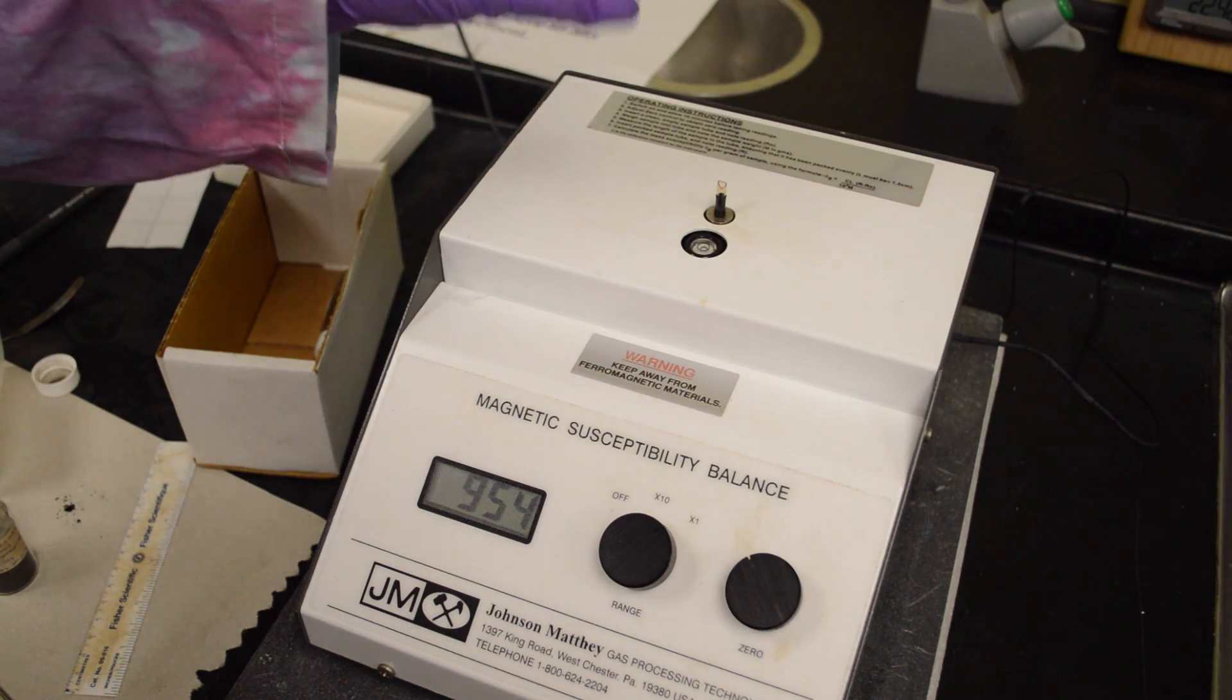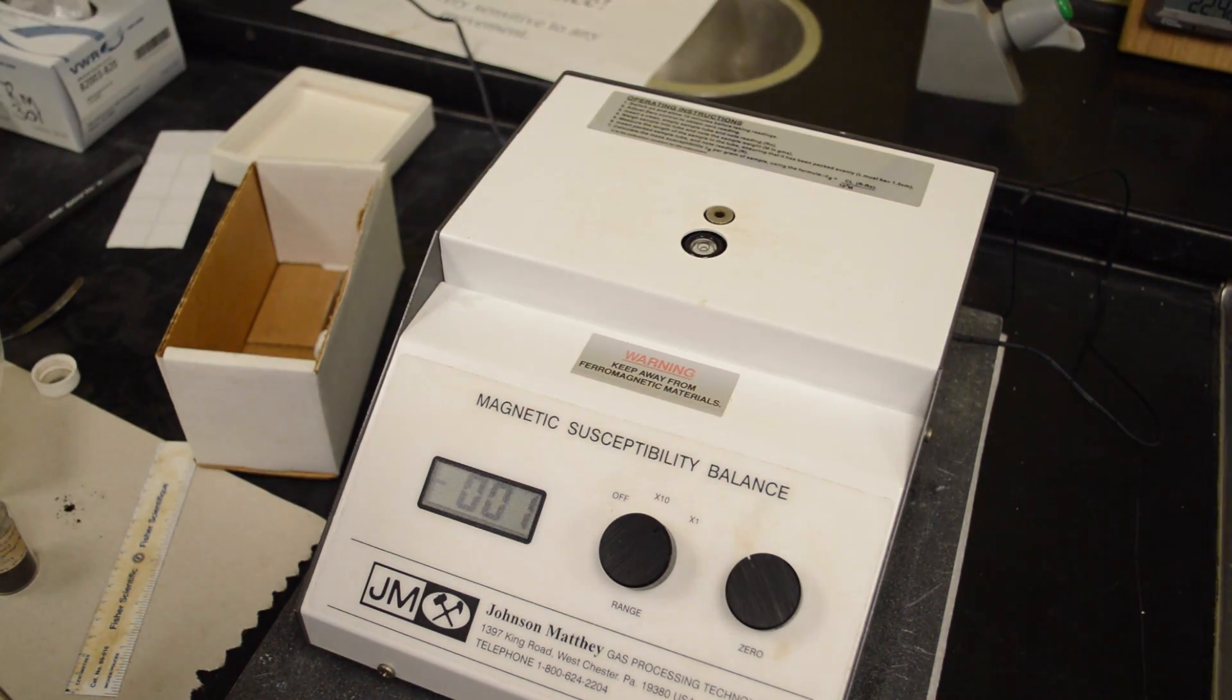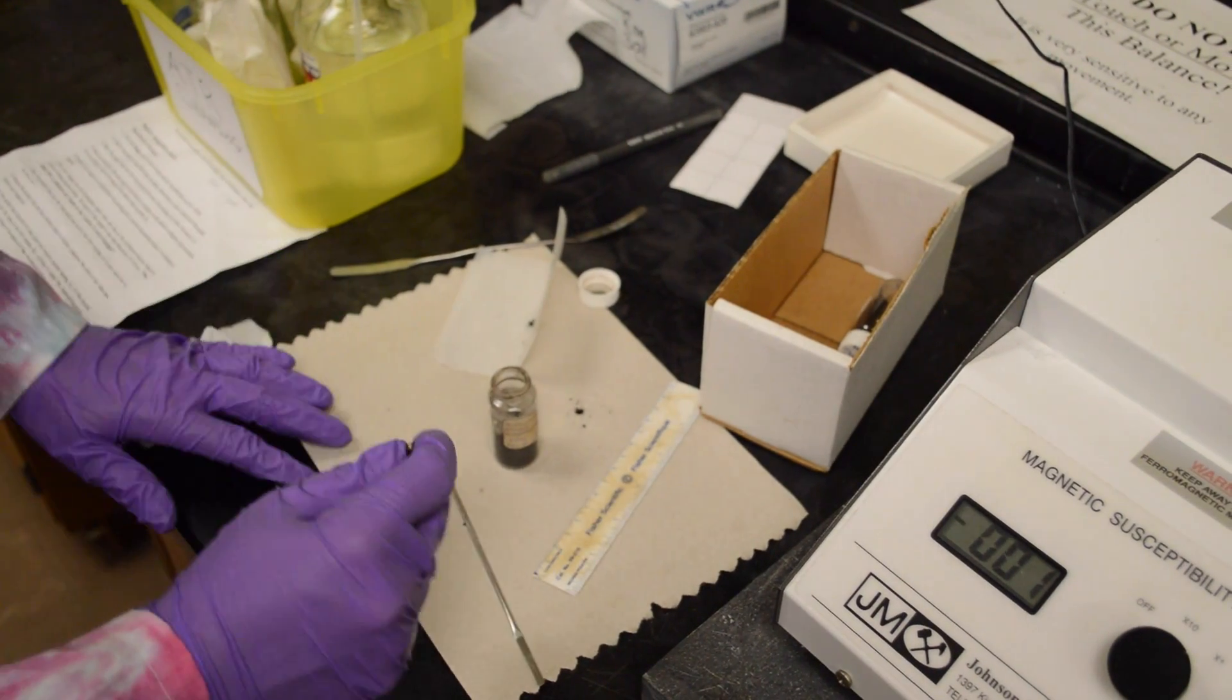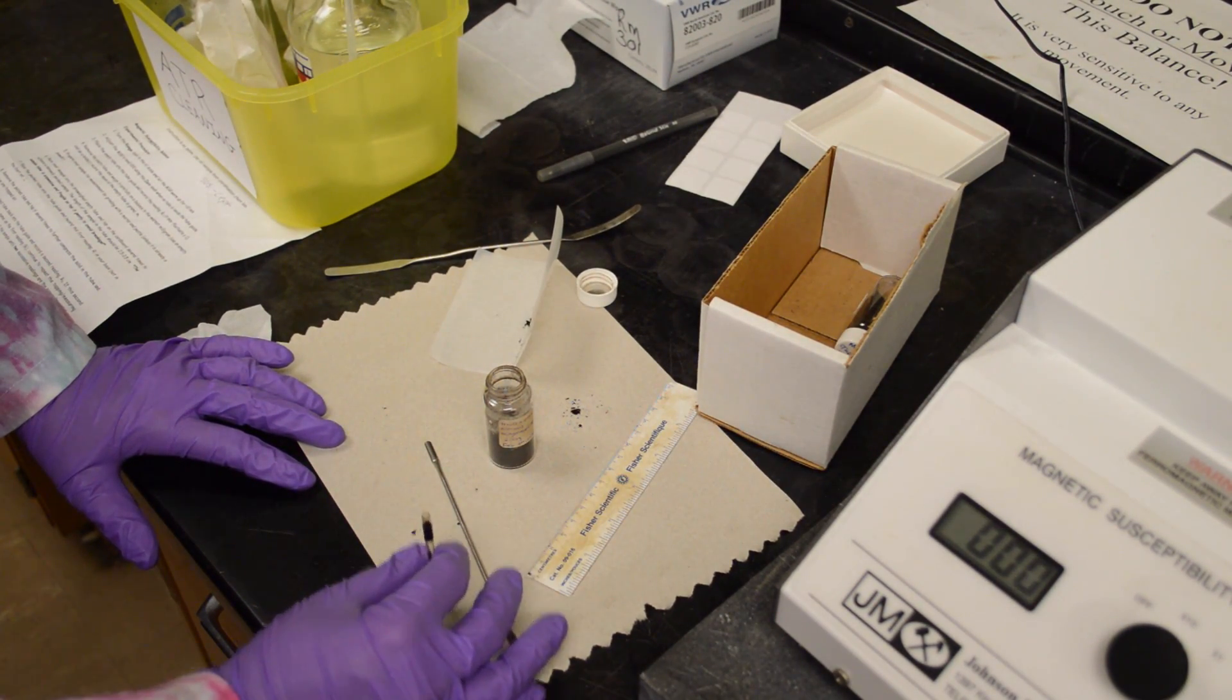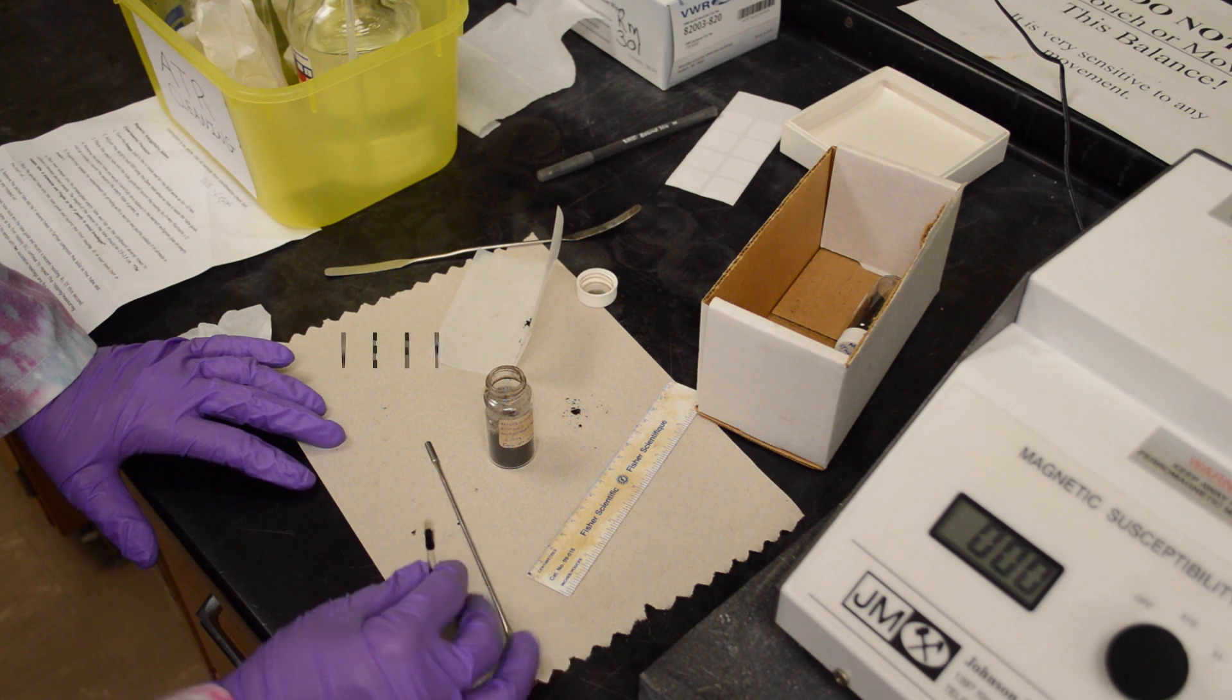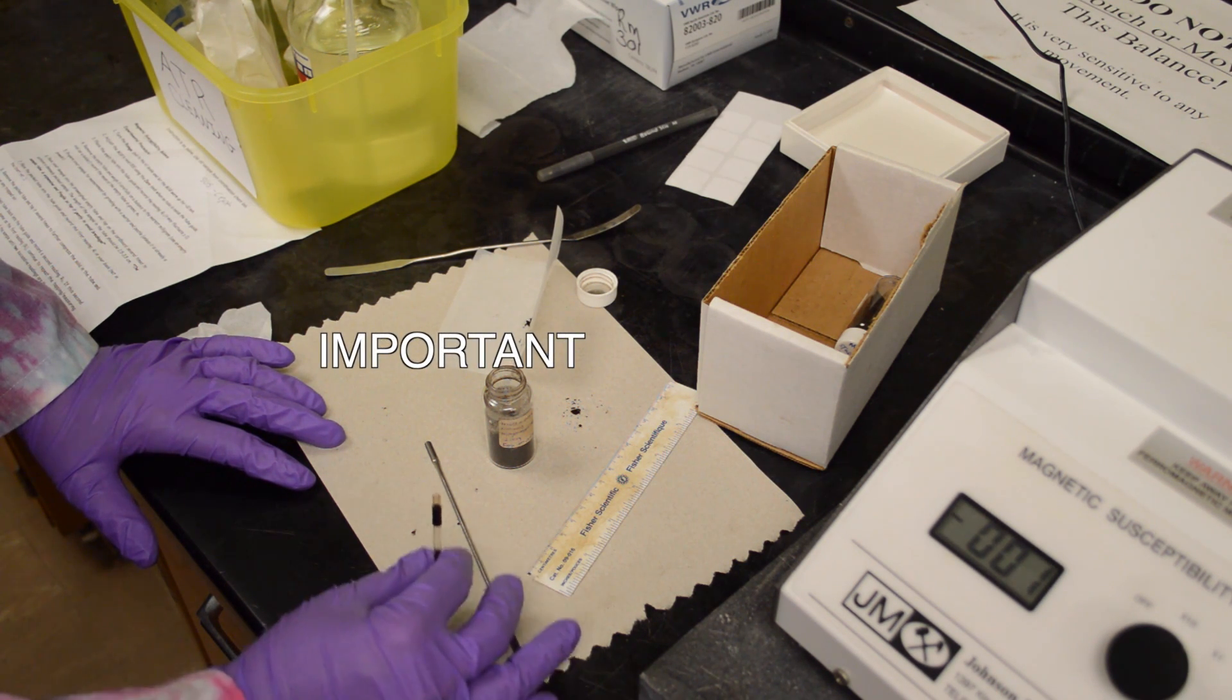Remove the tube once you have the initial reading and compact it against the bench until it is more compact. Then insert the tube back into the balance to make sure that you have the same reading. Once you have the same reading, you can go on to the next step.